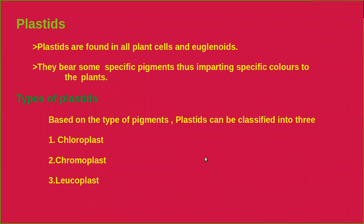Next, we are going to discuss plastids. Plastids are found in all plant cells and euglenoids — a group of organisms under the kingdom Protista. They bear specific pigments, imparting specific colors to plant parts.